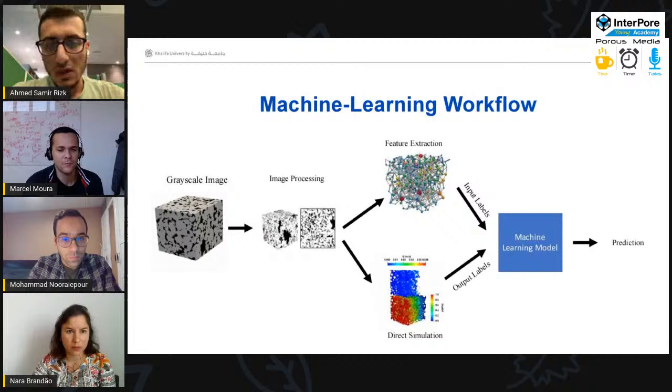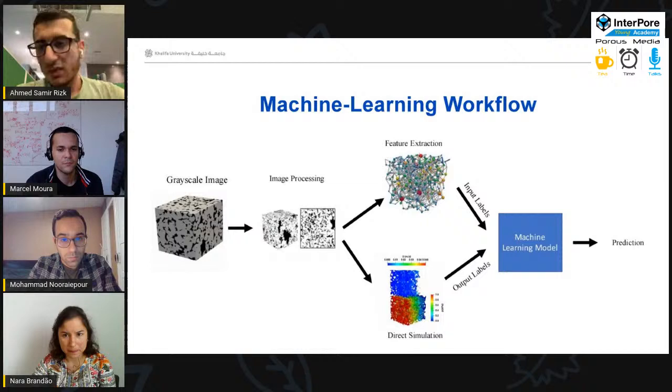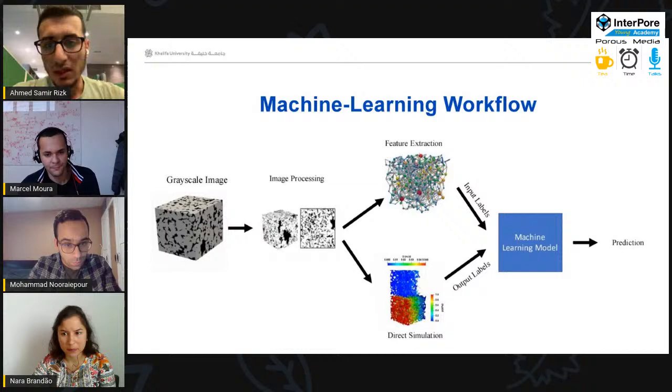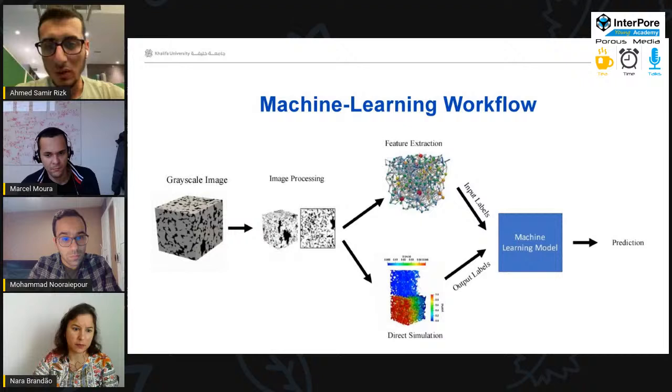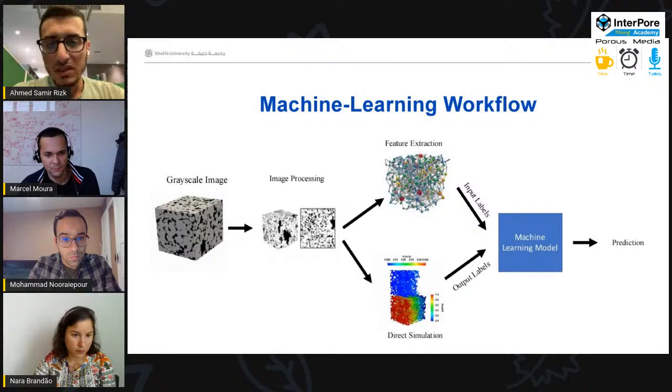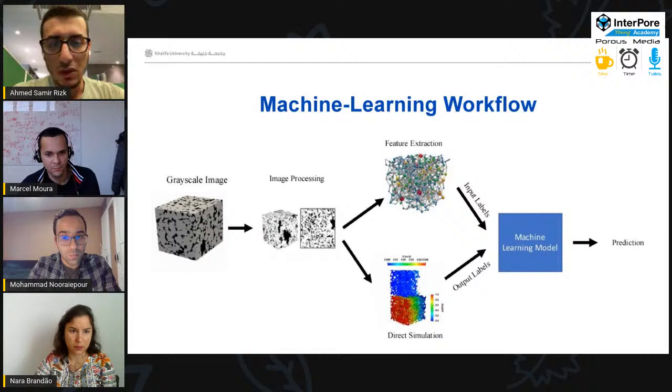We developed this workflow to estimate SOR in a very efficient and quick way. First, we'll start with the grayscale image. We do some imaging processing on it, like to segment it, to differentiate between the pores and the grains. Then we take a large number of these images through two processes. First one is feature extraction or feature engineering to extract some features that represent the pore space and the morphology of the rock. As well as we do direct simulation on these samples to know what is the SOR values that we will get under a specific water flooding conditions. We take these values from feature extraction as input labels and the SOR from direct simulation as output labels to the machine learning model.